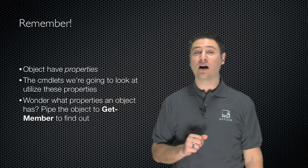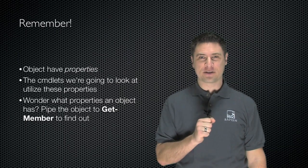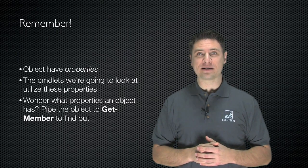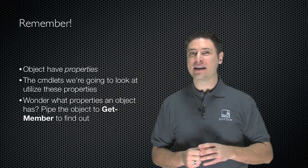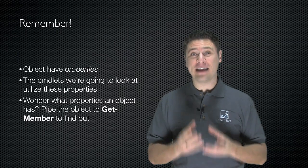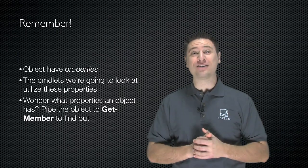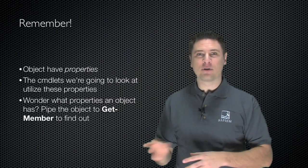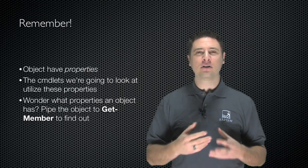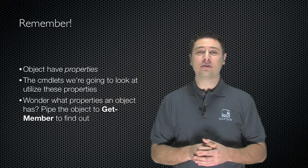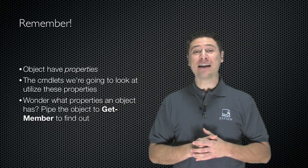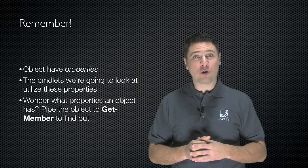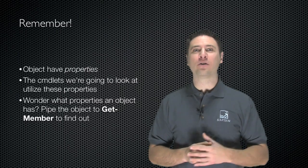The trick here is to remember that objects have properties. The cmdlets we're going to look at work directly with those properties. The big thing is finding out what properties are available to you. PowerShell is all about self-discovery. You don't have to look it up in developer documentation or a book. All you have to do is pipe an object to the Get-Member cmdlet, and PowerShell will show you what properties are available for you to work with.